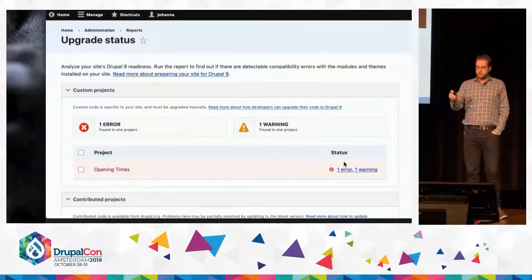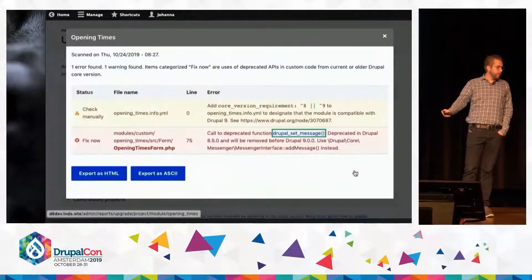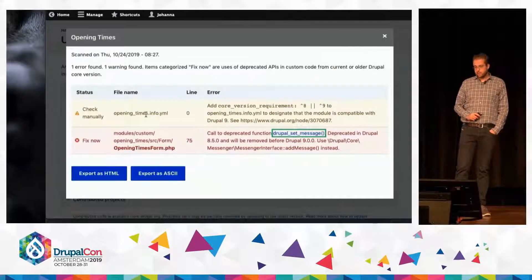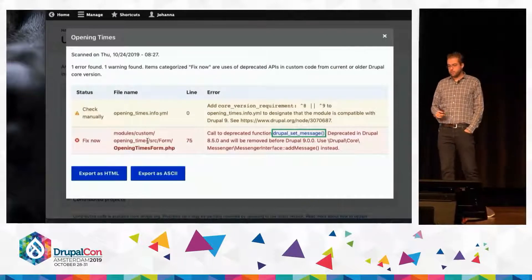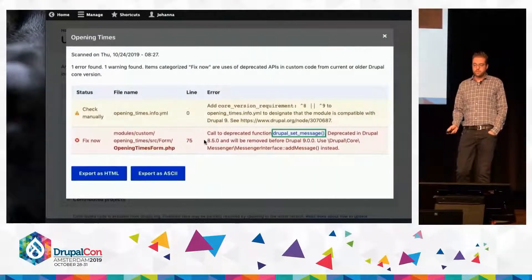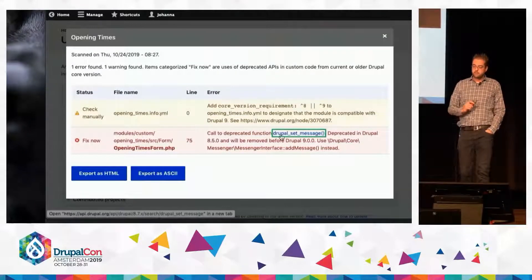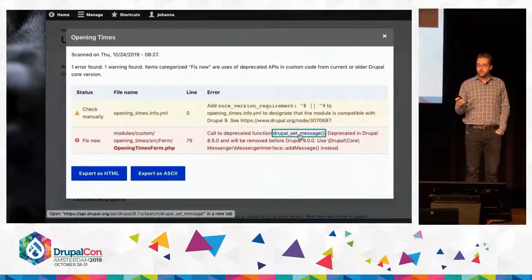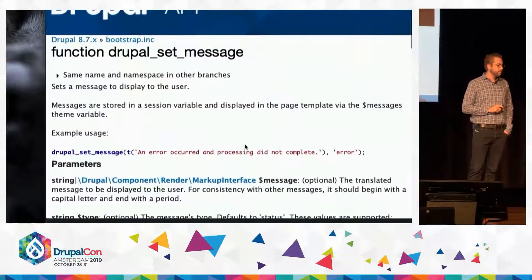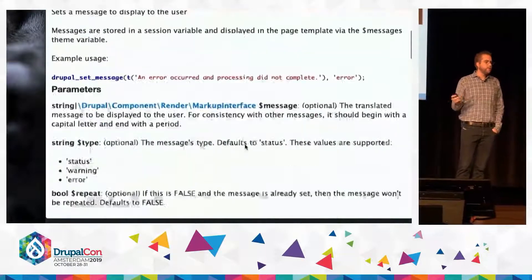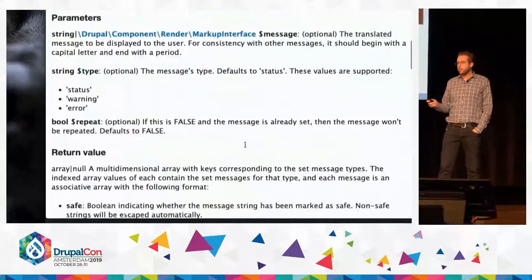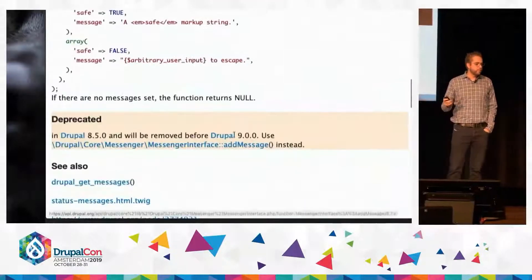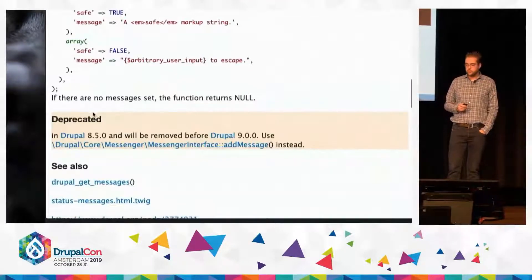This time, she's going to select her custom projects in the upgrade status module. You can see two problems: one is a warning, one is an error. In this case, she's using a function — DrupalSetMessage — and the error is telling her that function doesn't exist anymore, or will stop existing in Drupal 9.